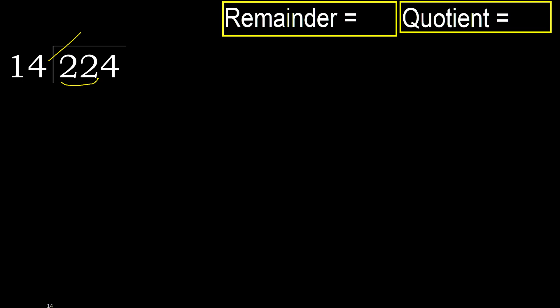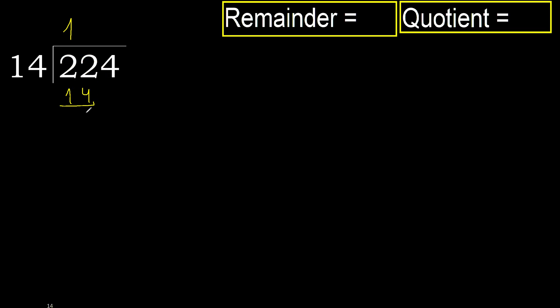But not greater. 14 multiplied by 2 is 28 — 28 is greater. Multiplied by 1 — 14 is not greater. Subtract, 8. Next.